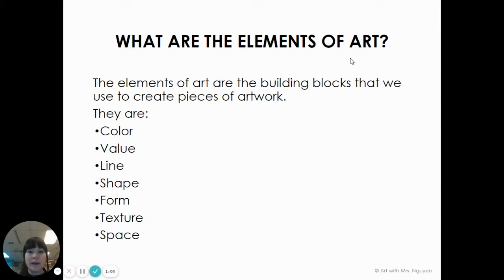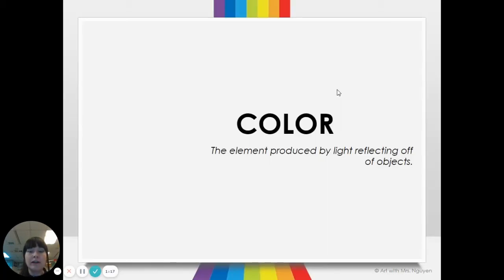And also there's space — that's how you use up your art space. In this video, I will explain the element of color. Color is the element produced by light reflecting off of objects. Depending on what kind of object it is, different wavelengths of light reflect off, and those different wavelengths give different colors. So art is connected with science a lot of times.